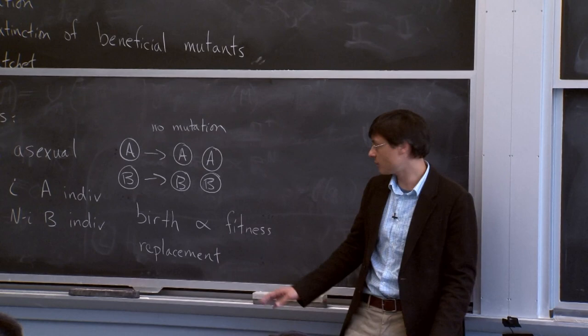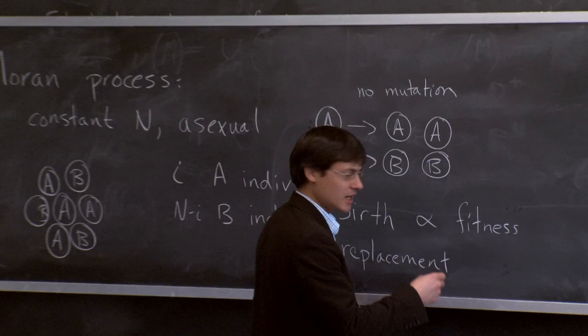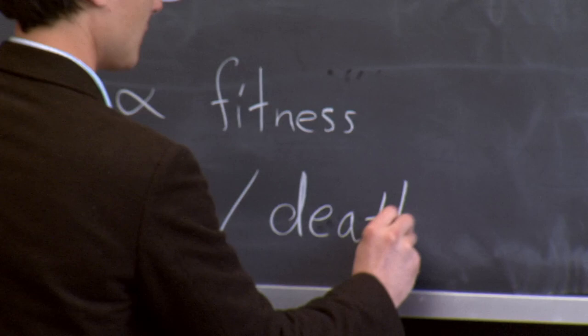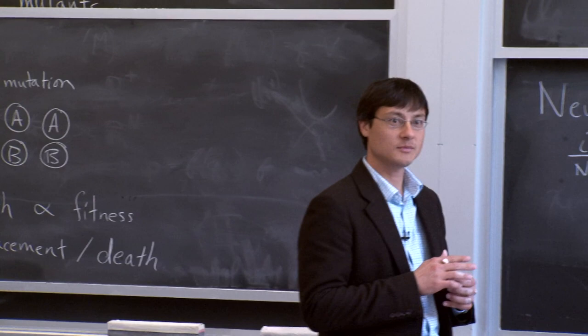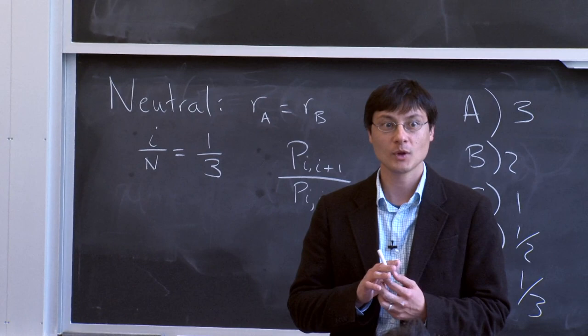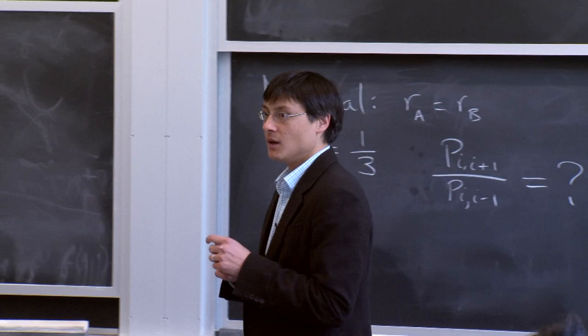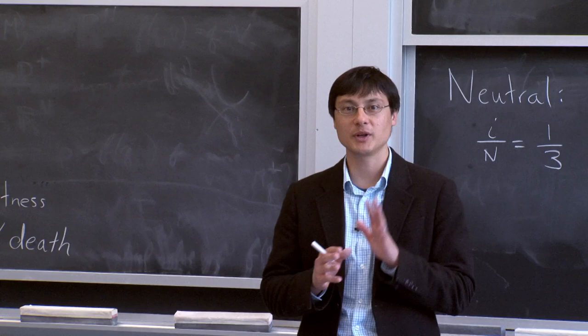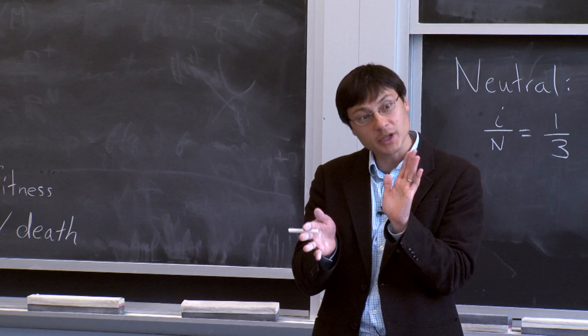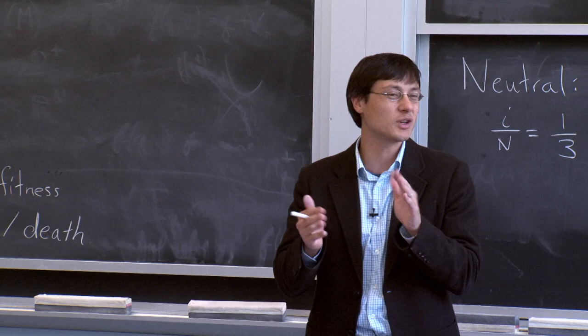The ratio of transition probabilities equals 1 — these two probabilities are equal — even though the population is not symmetric (1/3 A, 2/3 B). This is because the i/N terms cancel. This is a random walk in the number of A individuals, and it has to be, because A and B are neutral. The fact that i/N is not 1/2 doesn't matter.